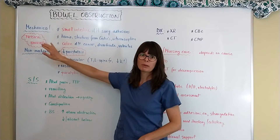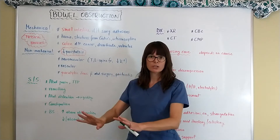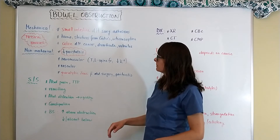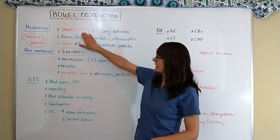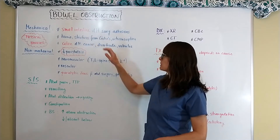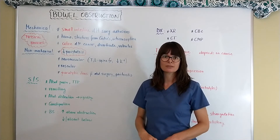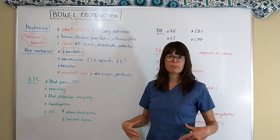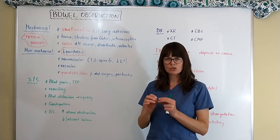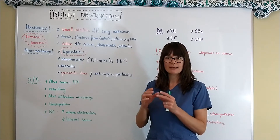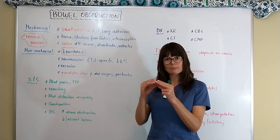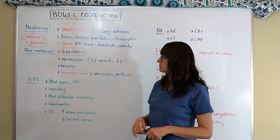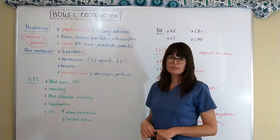Mechanical obstructions are the more common ones — that's an actual physical barrier that prevents digestive contents from continuing to move forward for excretion. The most common site is the small intestine, and it happens because of surgical adhesions. Adhesions are basically scar tissue that form after a patient has had previous surgery, and the scar tissue clamps down on the small intestine, creating that physical obstruction.